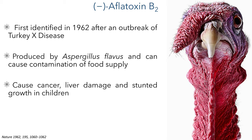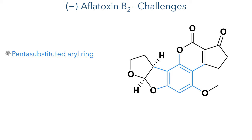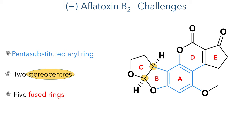These toxins are incredibly carcinogenic and can also cause liver damage and stunted growth in children. Chemically, these compounds are quite interesting for several structural reasons. The first is the penta-substituted aryl ring which forms the core of the molecule. There are also two stereocenters formed at the junction of two fused rings, which form part of a larger fused framework consisting of five different rings.